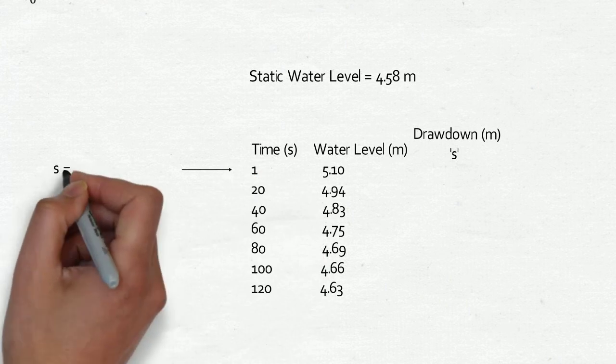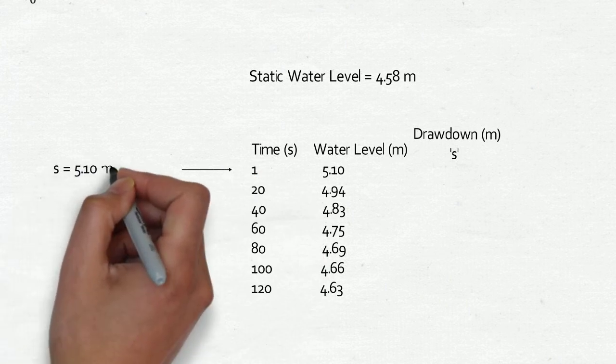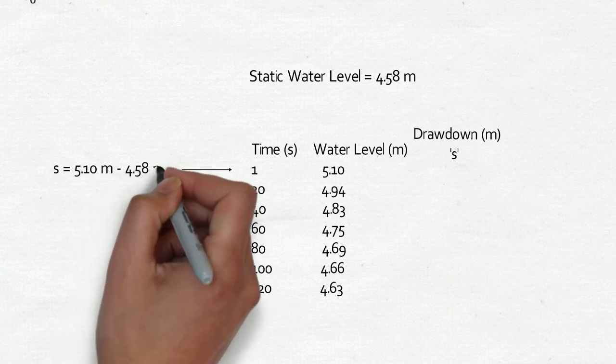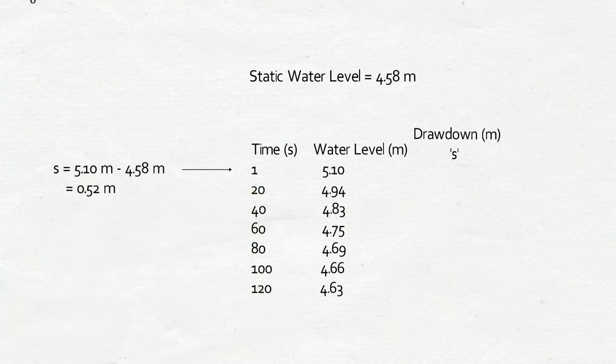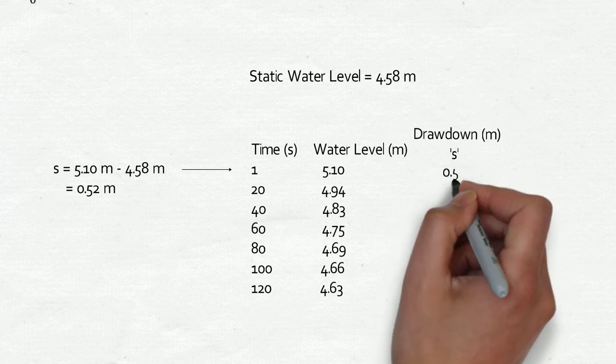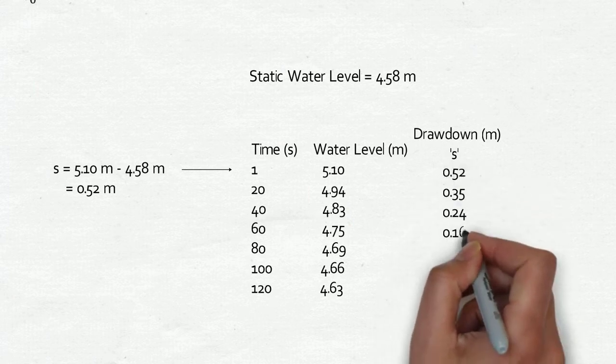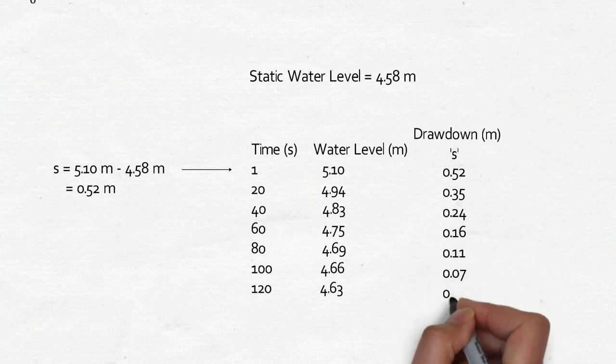Calculate the drawdown by subtracting the static water level from the water level measured at each time in the table. For the first data point, at time equals one second, the drawdown is 5.10 meters minus 4.58 meters, which gives us 0.52 meters. Repeat the calculation for the rest of the values in the table, each time subtracting 4.58 meters from the observed water level.